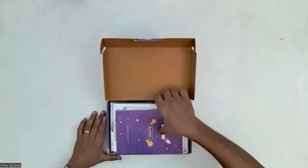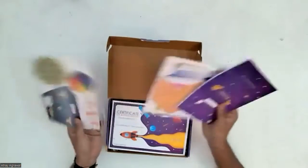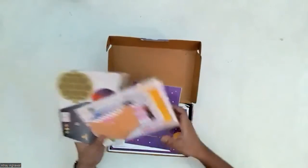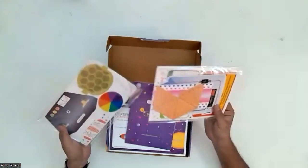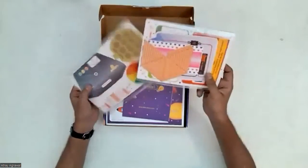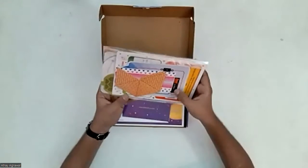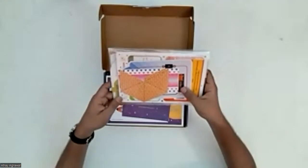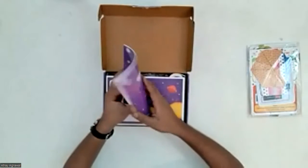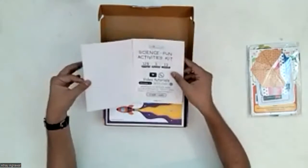First off we have these three things. One is a simple booklet. I'm just going to open it and show you. These two are cardboard cutouts for different elements like torch, pyramid, lantern, and all of these things. I'm going to keep it over here.